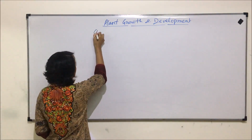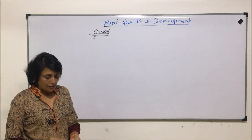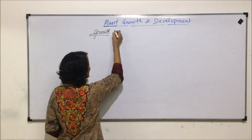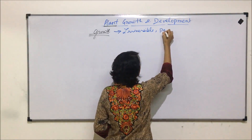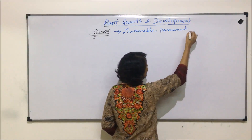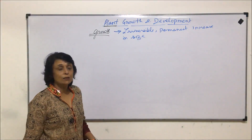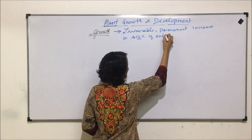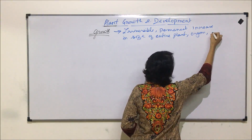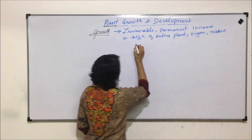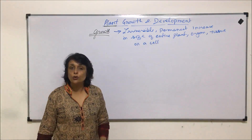Let us start with the first thing — growth. We have to keep in mind that we are talking about plant growth. How do we define this growth in case of plants? It is defined as an irreversible, permanent increase in size of the entire plant, or an organ, or a tissue, or even at a cellular level or a cell.